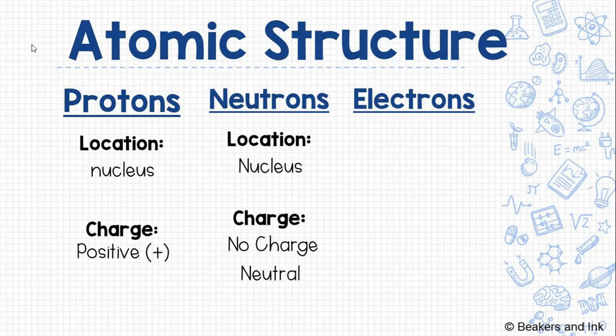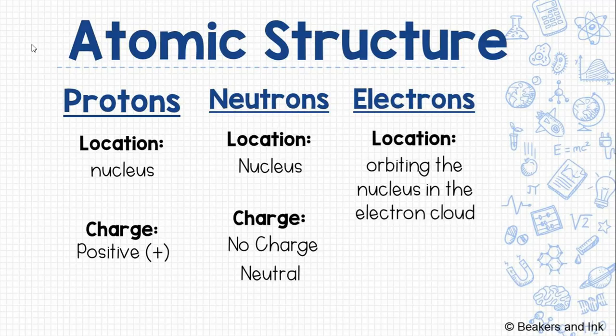For example, if you have two friends and they're fighting over something, you might say, I'm not taking sides. I'm going to stay neutral. I have no opinion. Lastly, we have electrons. Electrons are found orbiting the nucleus in a location called the electron cloud. Electrons have a negative charge.